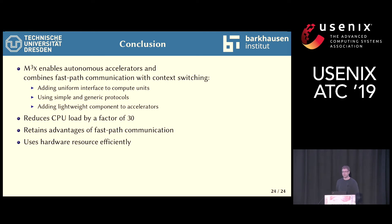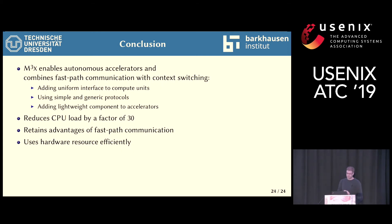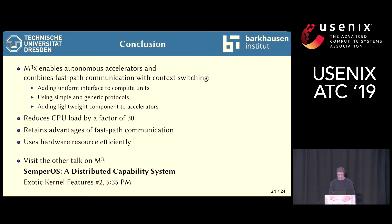In conclusion, M3X enables autonomous accelerators and combines fast path communication with context switching by: first, adding a uniform interface to all compute units; second, using simple and generic protocols for OS service access; and third, adding a lightweight component to accelerators instead of requiring them to provide features. This reduces CPU load by a factor of 30. We retain the advantages of fast path communication while also using hardware resources more efficiently through context switching. If you want to know more about M3, there is another talk called SemperOS in the next session, showing how to scale an M3-based system to hundreds of compute units.